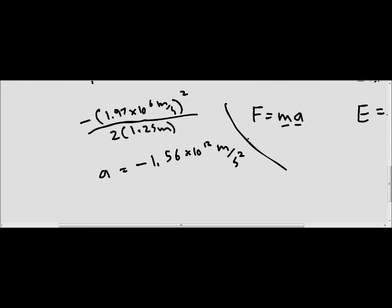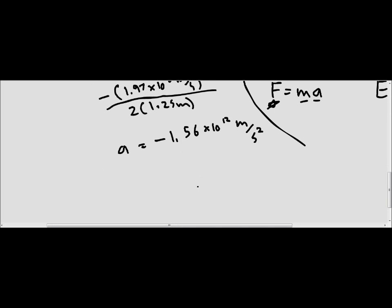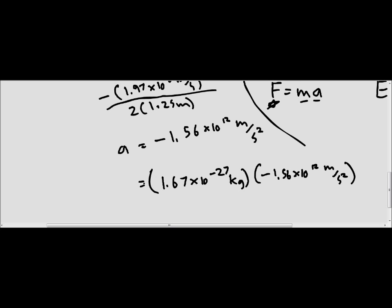We're going to plug this acceleration into F = ma to find the force. We've got the mass of the proton, 1.67 times 10 to the negative 27 kilograms, times negative 1.56 times 10 to the 12 meters per second squared. The answer we get when we multiply those together is negative 2.6 times 10 to the negative 15 newtons.